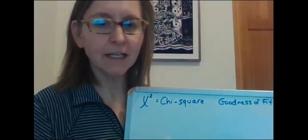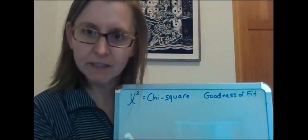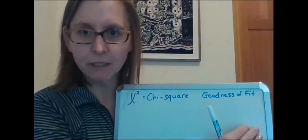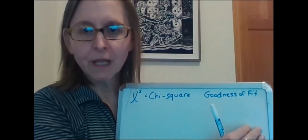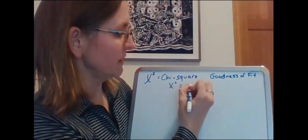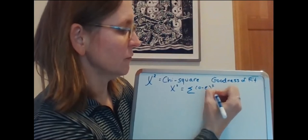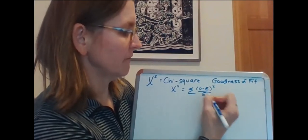So this is the symbol for a chi-squared and there are a couple of types of chi-squared tests I'm going to review in this video. The goodness of fit test because it's the most simple. They're both pretty simple and both chi-squared tests use the same equation which is chi-squared equals the summation of observed values minus expected values squared divided by expected values.